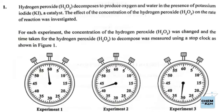Number one: hydrogen peroxide H₂O₂ decomposes to produce oxygen and water in the presence of potassium iodide as a catalyst. The effect of the concentration of hydrogen peroxide on the rate of reaction was investigated. For each experiment, the concentration was changed and the time taken for the hydrogen peroxide to decompose was measured using a stop clock, as shown in Figure 1.